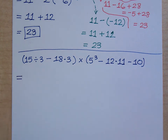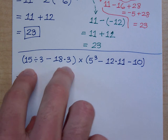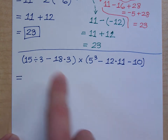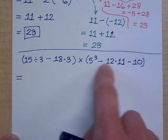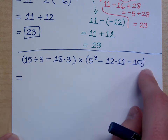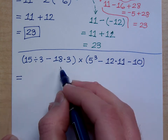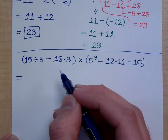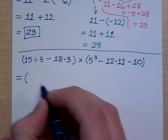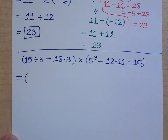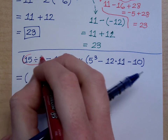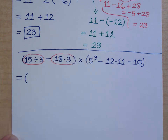I've got two sets of parentheses. The order of operations says you've got to take care of the stuff inside each one, and then you do multiplication. I've got 15 divided by 3 stuck together, and 18 times 3 stuck together. What's 15 divided by 3? That gives me 5 minus 18 times 3.